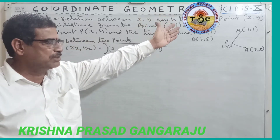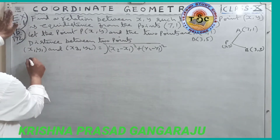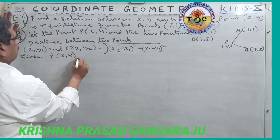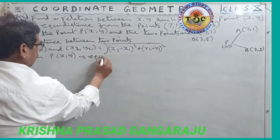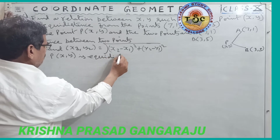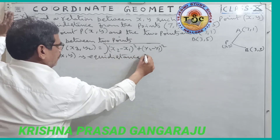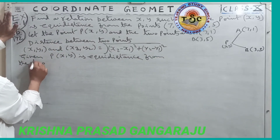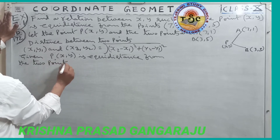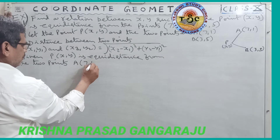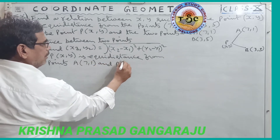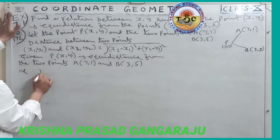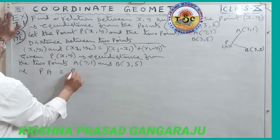Since P(x, y) is equidistant from the two points A(7, 1) and B(3, 5), the meaning of equidistance is that PA is equal to PB.